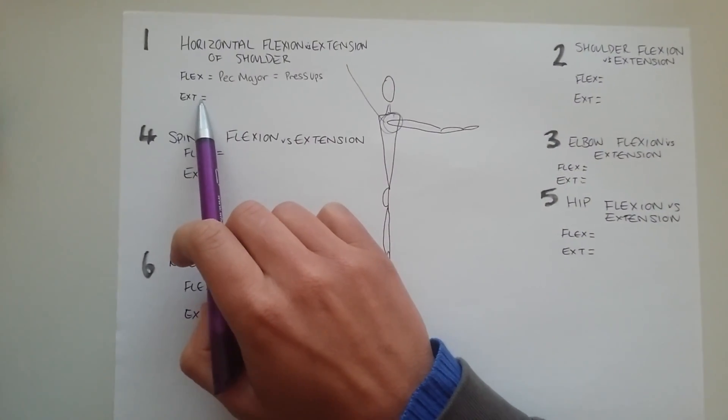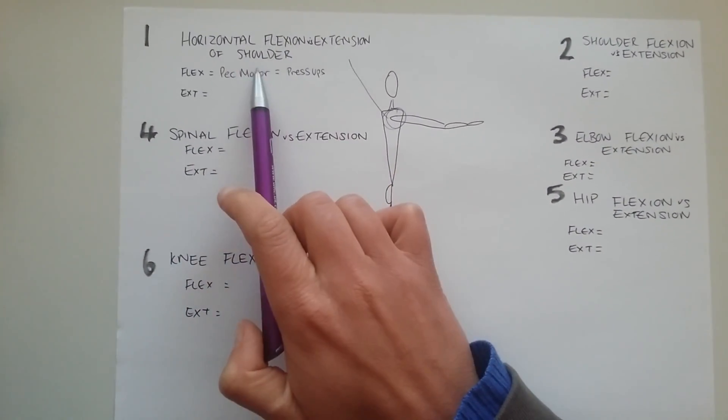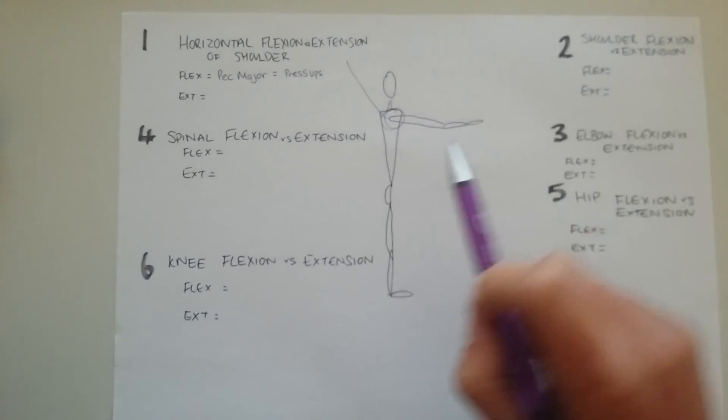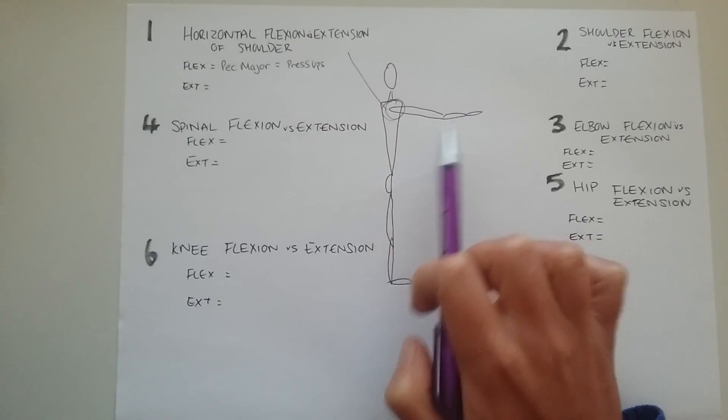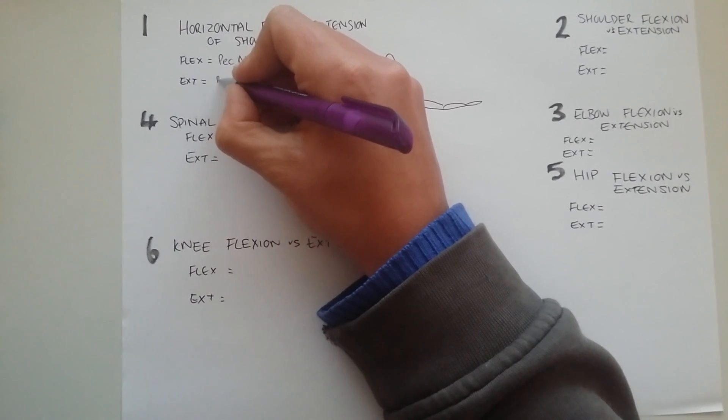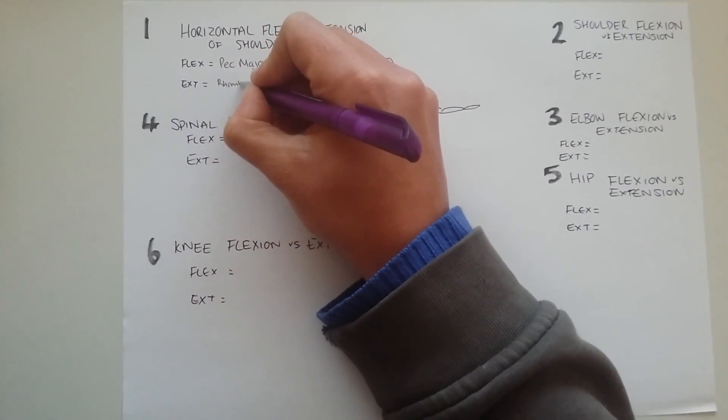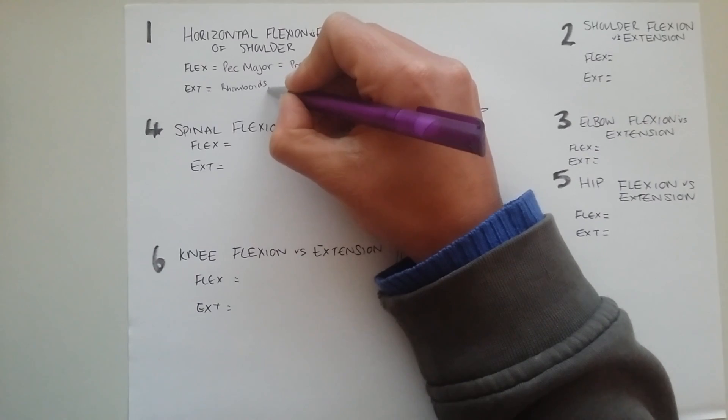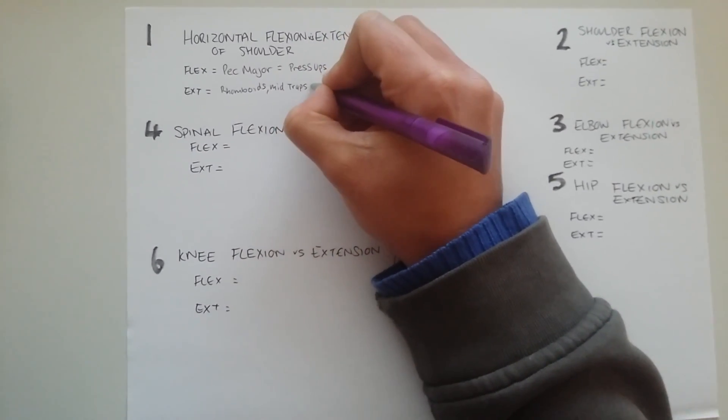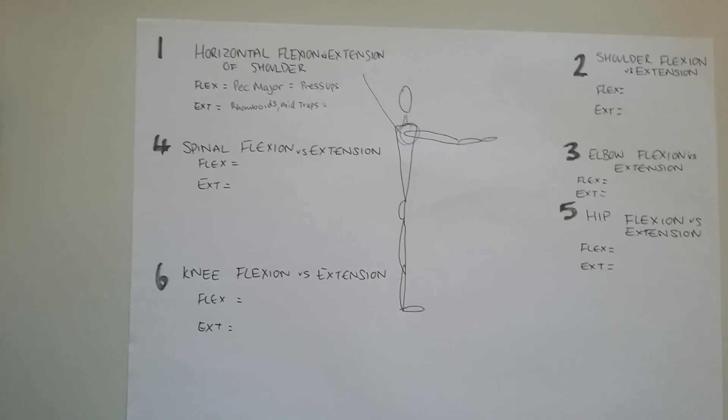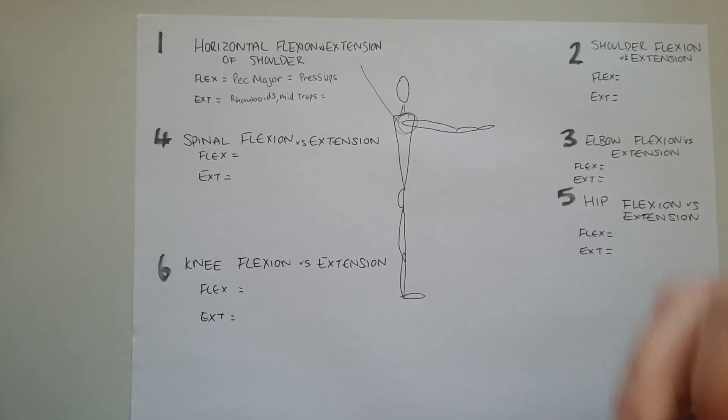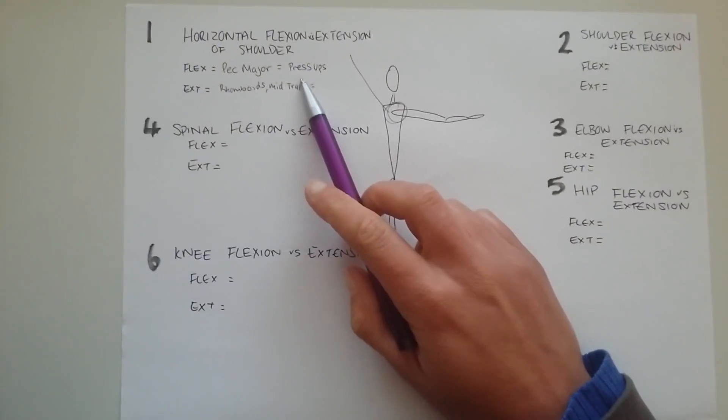Then opposite to that is horizontal extension of the shoulder. Now horizontal extension of the shoulder is going to work the opposite. So this is when your arms are going from the position that you can see this man in now and opening them out towards a T-shape. And the muscles that are going to work on this are two. One is the rhomboids and then the second one is the mid-traps. So mid-trapezius. Now these ones work together to basically close your shoulder blades. So you're going to pull your shoulder blades together which opens up your chest. Therefore it's the opposite to this first one, the flexion.